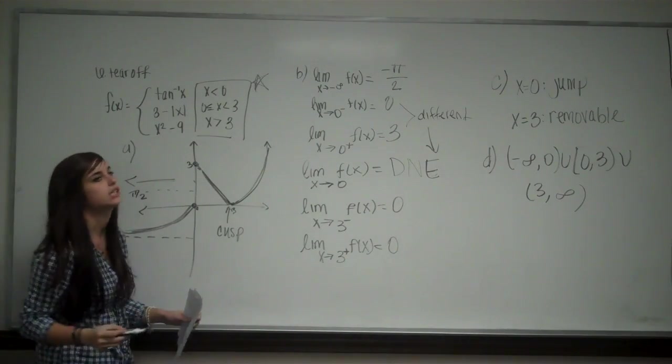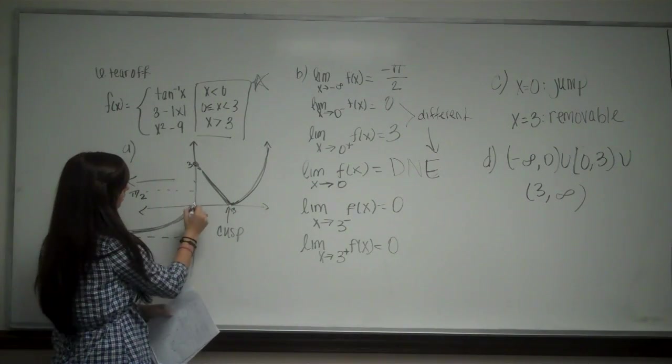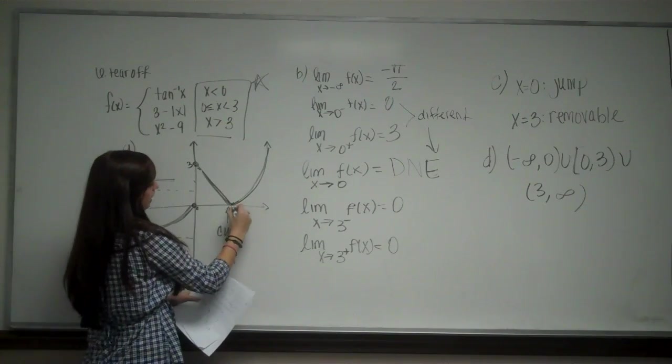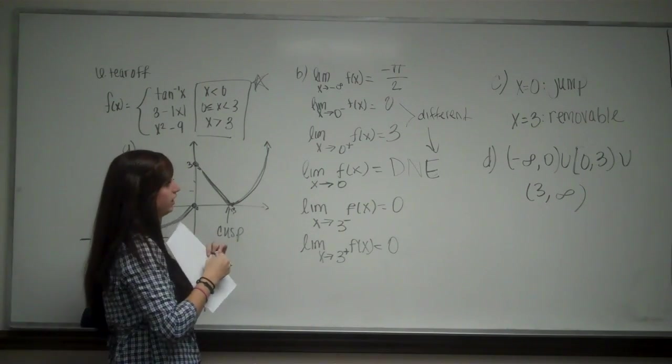And then I have to stop and then it's continuous again from 3 to infinity. So when you're looking for where it's continuous, it goes, it goes, it goes, and it stops. And then I have to start my interval over, goes, and then it stops because I had a discontinuity. And then I start it over.